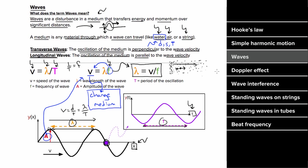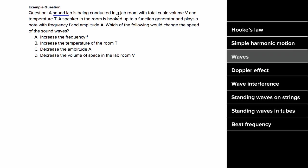Here's an example wave problem. A sound lab is conducted in a room with total cubic volume V and temperature T. A speaker plays a note with frequency F and amplitude A. Which of the following would change the speed of the sound waves? Increasing frequency just makes a higher note but doesn't change wave speed. Increasing the room temperature is a change to the medium, so this would change the speed of sound. Decreasing amplitude just makes the sound softer. The best answer is B.